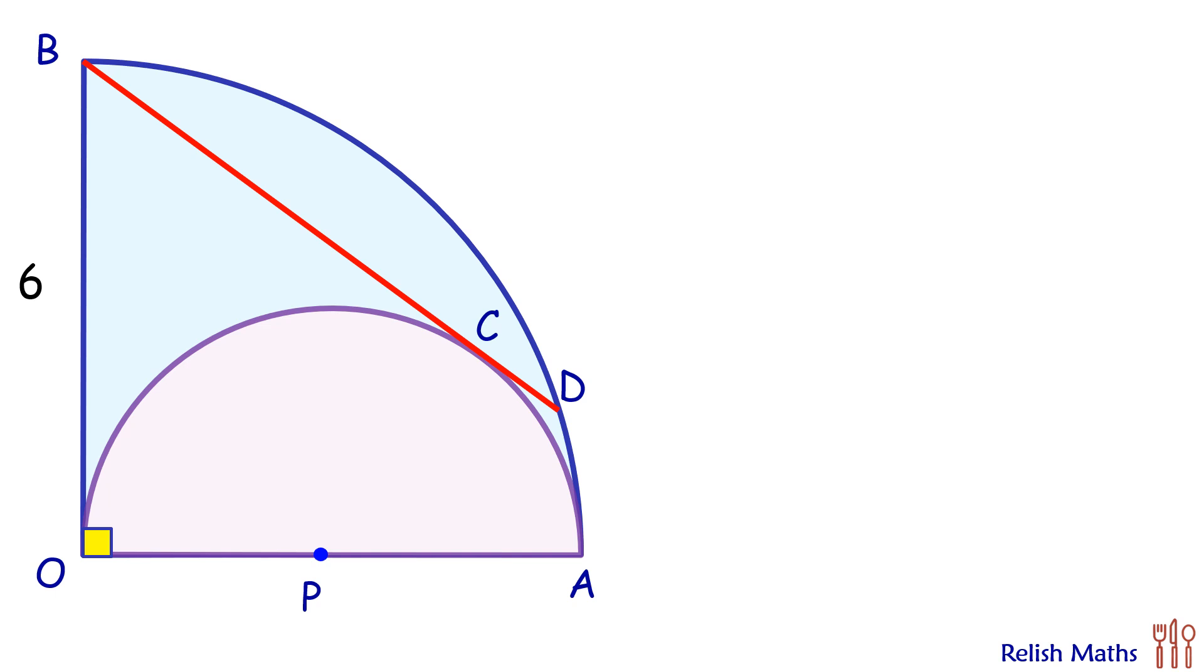Here in this diagram we have to find the length of tangent or we have to find length of BD. To solve our question we will extend BD and OA and let's assume they are meeting at point E.